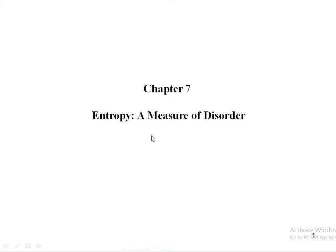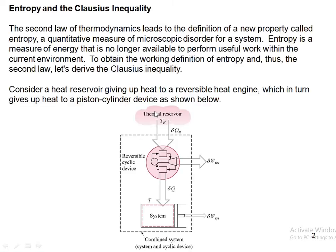The next chapter is entropy, a measure of disorder. The second law of thermodynamics leads to the definition of a new property called entropy. It is a quantitative measure of microscopic disorder for a system. Entropy is a measure of energy that is no longer available to perform useful work within the current environment — it gives us information about energy which is not available to perform useful work.